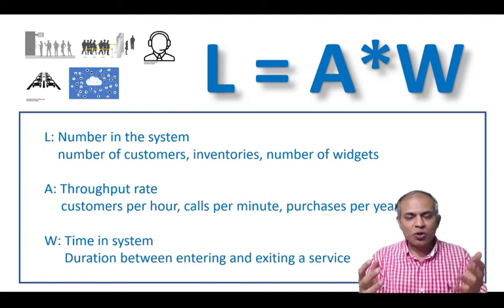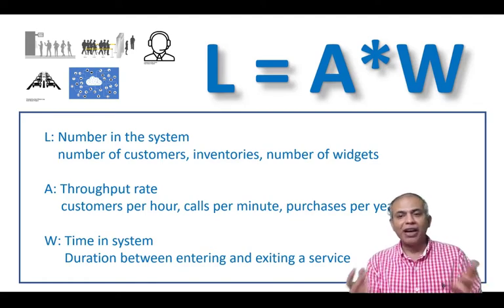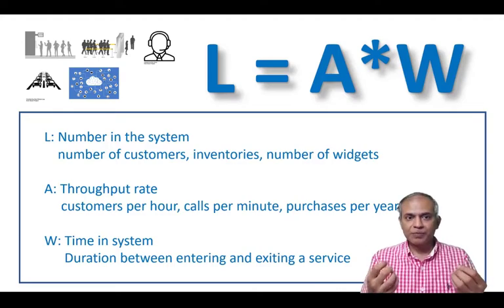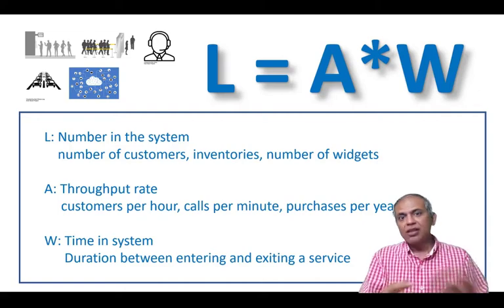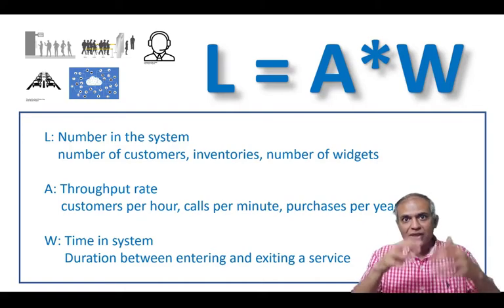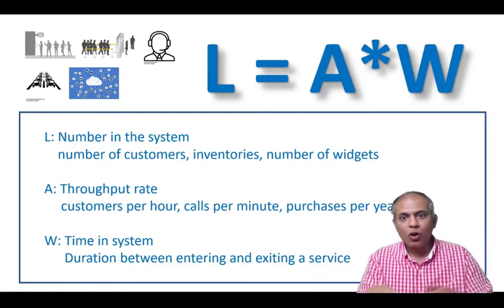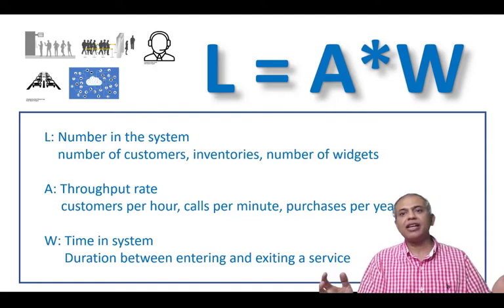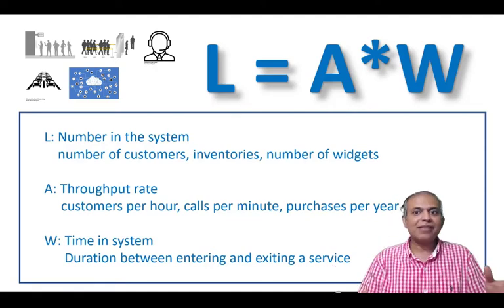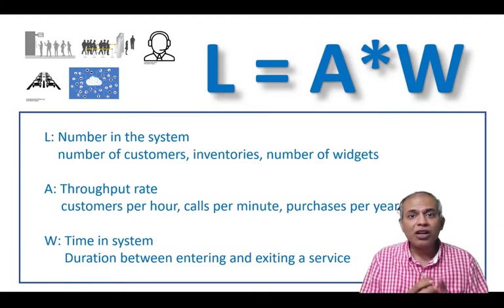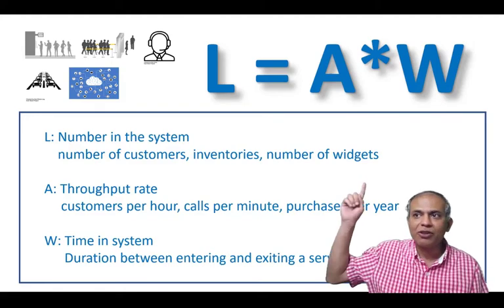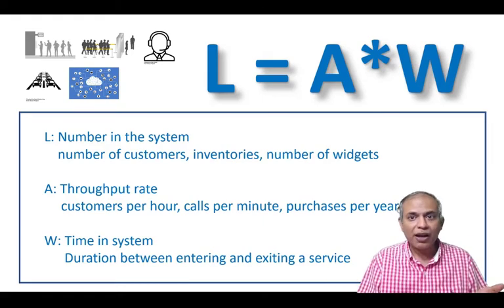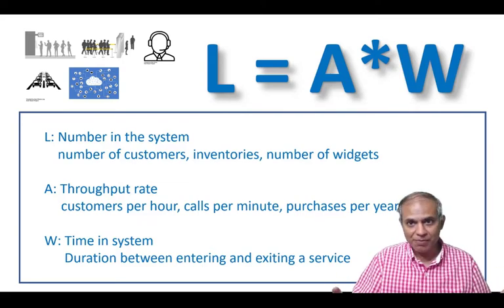Little's Law correlates three things. L is the number of items in the system — the number of calls being addressed, or the number of cars in traffic. A is the throughput rate, the rate at which flow happens, always expressed as something per time — customers per hour, or calls per minute. W is the duration, the time it takes. Little's Law says that if we know any two of these, the third can be easily calculated by the formula: the number in the system equals the product of the throughput rate and the wait time of the object in the system.